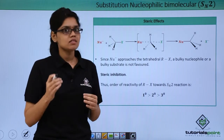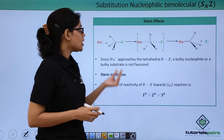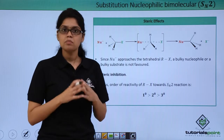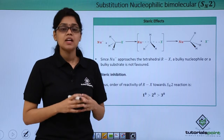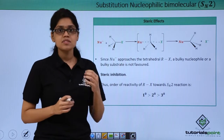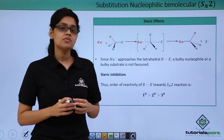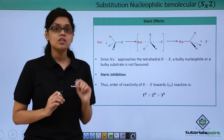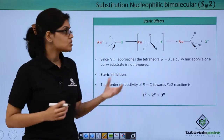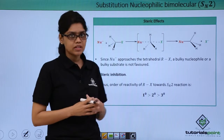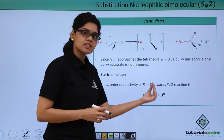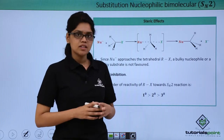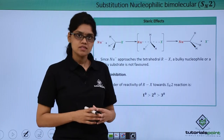Any sort of steric hindrance should be avoided. A bulky nucleophile or a bulky substrate will not be preferred in an SN2 reaction — this particular mechanism suffers greatly from steric inhibition. For the same reason, the order of reactivity of alkyl halides towards SN2 reaction will be primary greater than secondary greater than tertiary.